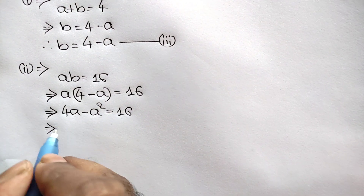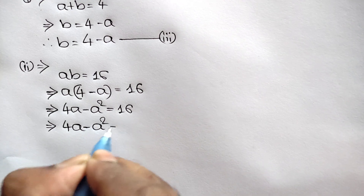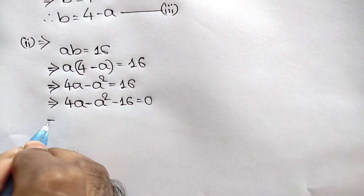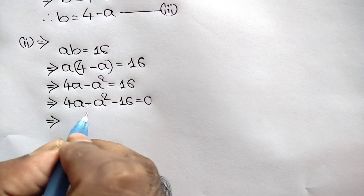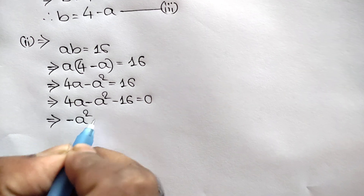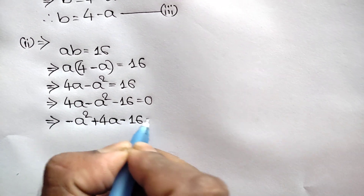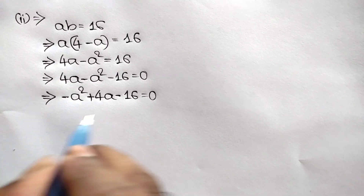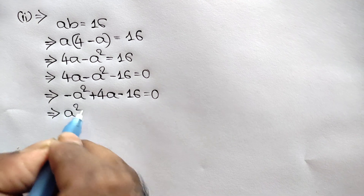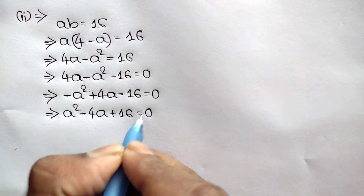Taking 16 to the left side gives 4a minus a squared minus 16 equals 0. Rearranging: negative a squared plus 4a minus 16 equals 0. Multiplying both sides by negative 1, we get a squared minus 4a plus 16 is equal to 0.